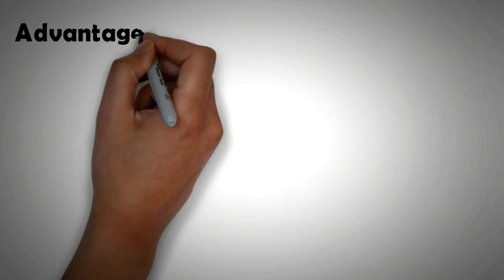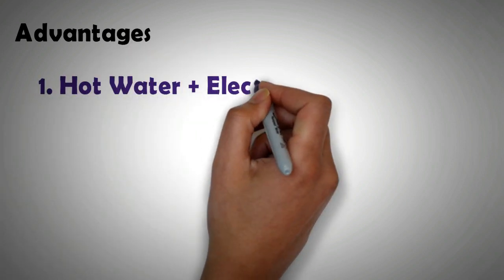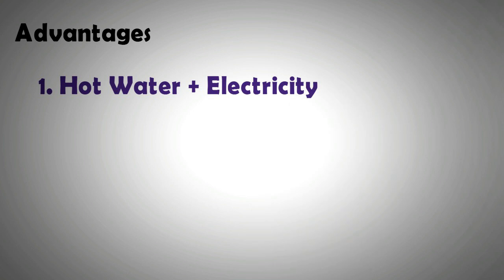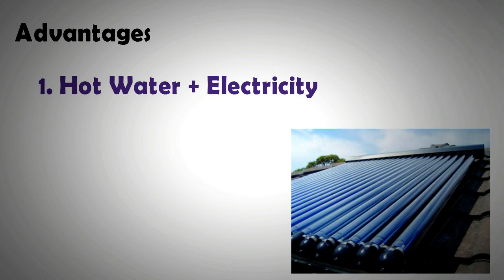There are two additional advantages of STEG technology. Firstly, it can work in conjunction with solar water heating systems. In China alone, there are 100 million square meters of solar hot water panels. Research is currently underway on developing hybrid systems that produce both hot water and electricity using STEG technology. The economics of such systems look extremely favorable on paper.